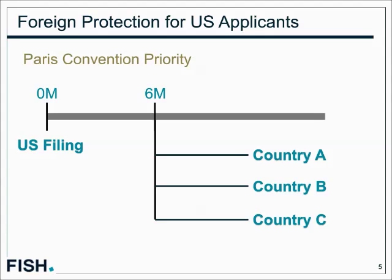Up until now, when you wanted to protect your design as a US inventor in both the US and other countries, you would file a US design application. Under the Paris Convention, you have a six-month priority window to protect that design similarly in other countries, with those national applications examined on the basis of your US filing date. Along this timeline, at six months you would file separate applications in various countries — some operating under a registration system, some examining against prior art.